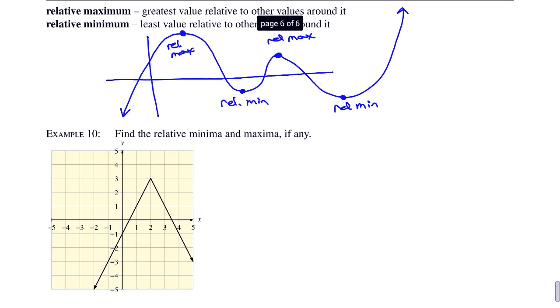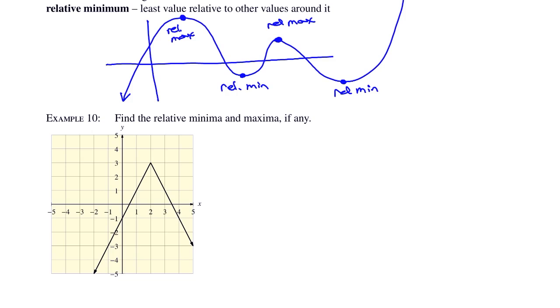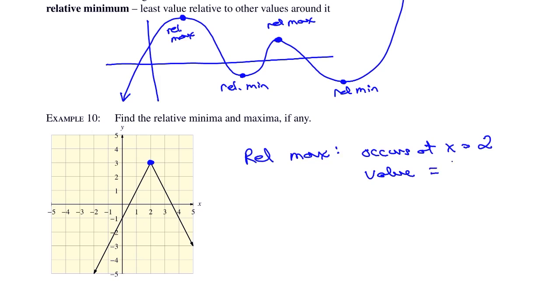In example 10, find the relative minima and maxima if any. Graphs don't have to have them, but this one does. The relative max occurs at the peak, at x equals 2, and the value of the relative max is 3 — it's the y value. Notice the graph continues to decrease on both sides and never stops, so as far as relative minimum goes, there are none.